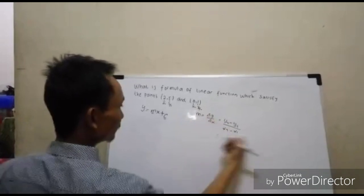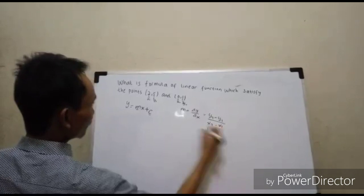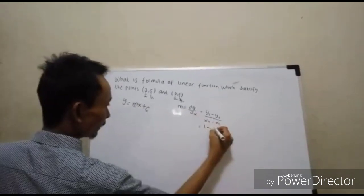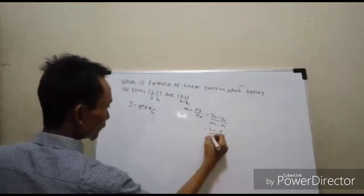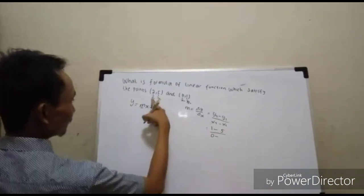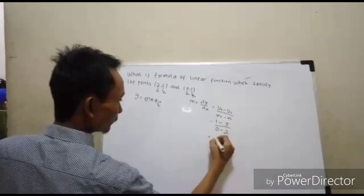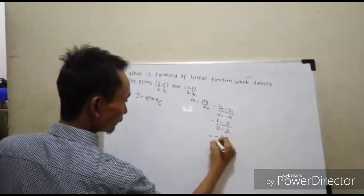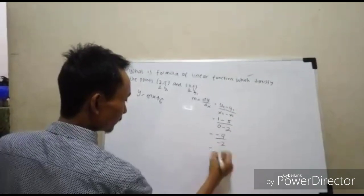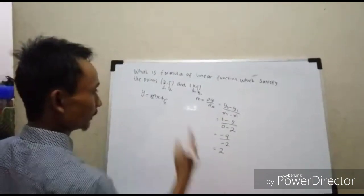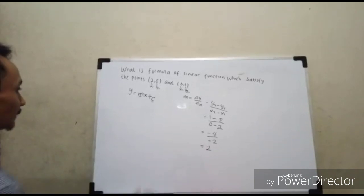Now substitute the values: -1 minus 5 equals -6, divided by 0 minus 2 equals -2. -6 divided by -2 equals 2. So the value of M is 2.